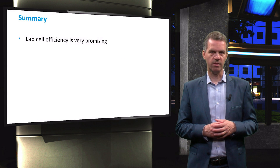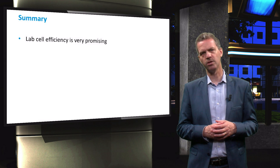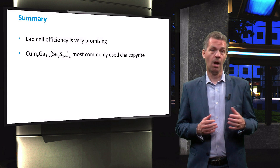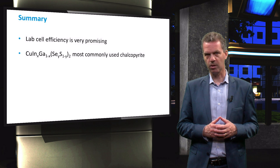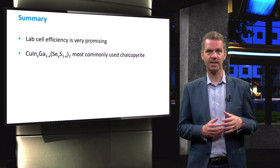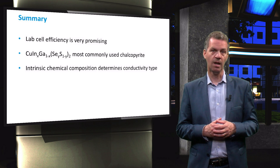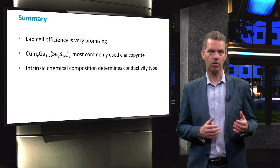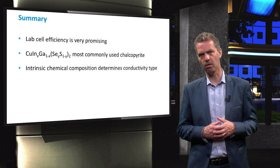To summarize this video, we have discussed the very promising CIGS research cell efficiency of up to 22.6%. We have shown that the most commonly used chalcopyrite structure for solar cell applications is copper-indium-gallium diselenide/disulfide with X and Y between 0 and 1. And finally, we have discussed how the conductivity type of CIGS is determined, namely by the composition of the material rather than by an extrinsic doping of impurity atoms.